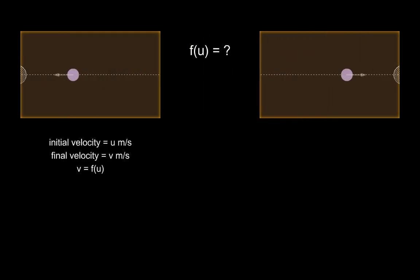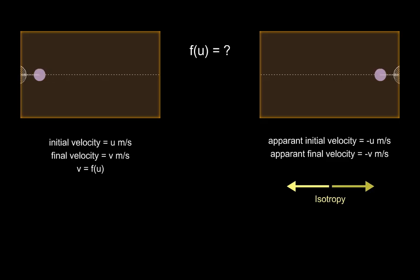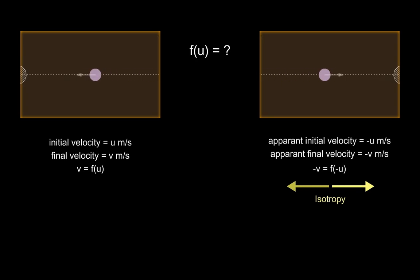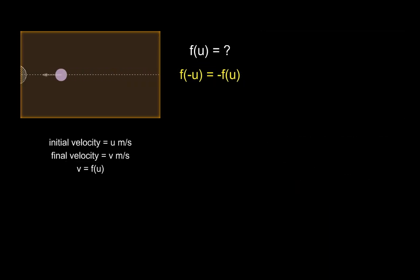What if we reverse the direction of space? The initial and final velocities of the particle would then appear to be negative u and negative v respectively. But shouldn't the laws of physics remain the same whether the particle is moving from left to right or right to left? This property of being invariant in all directions is called isotropy — our first postulate. The laws of physics remain the same in all directions. This means the axis-reversed case should follow the same law f, giving us: negative v equals f of negative u. We can substitute v to get a relation that constrains f to odd functions, but that's not nearly enough to pin it down.